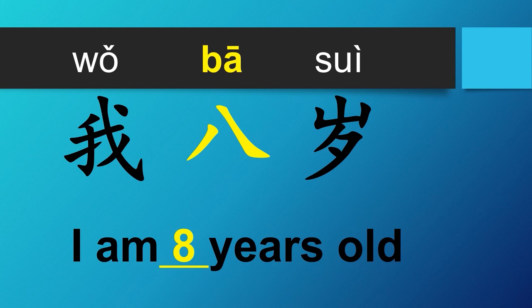To say your age in Chinese, we simply say 我, followed by the number of your age, and then 岁. If you are eight years old, you would say 我八岁. If you are seven years old, we just replace 八 with the number seven.